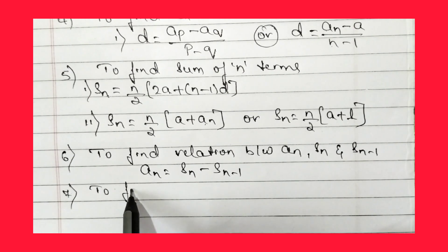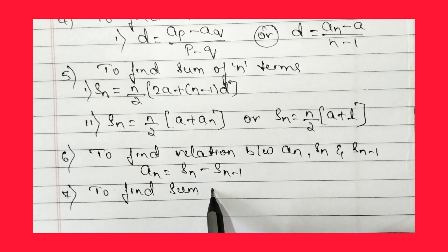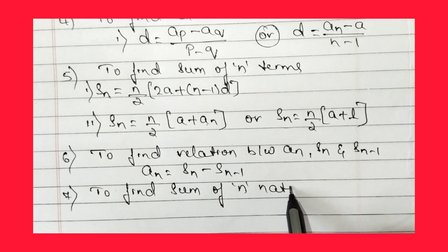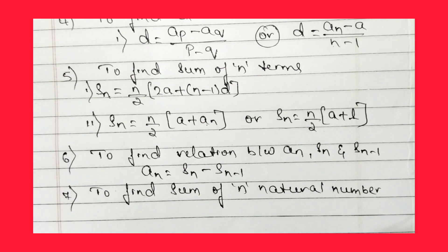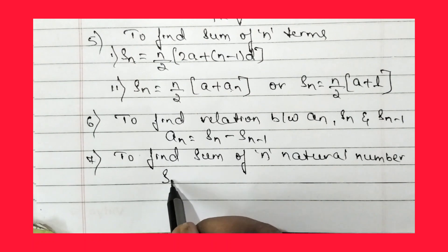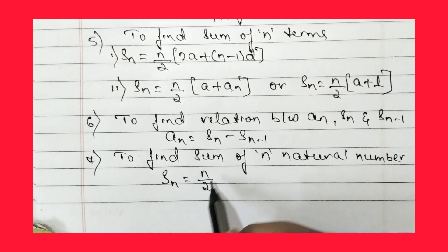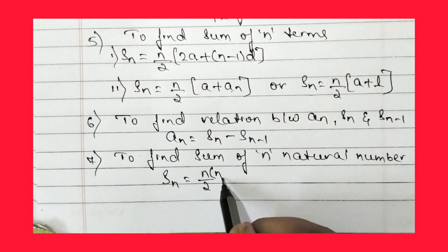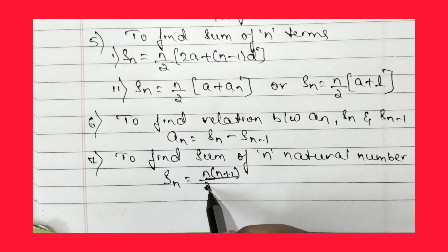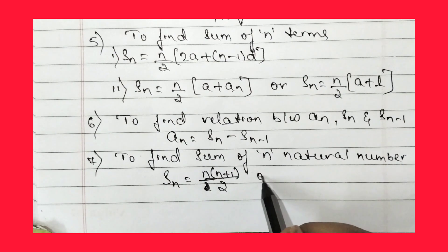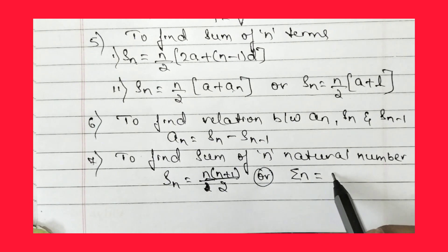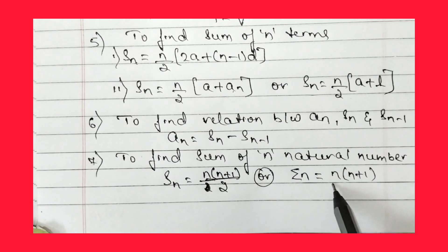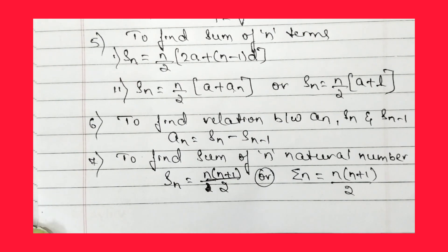The seventh formula is to find the sum of n natural numbers. The formula is: Sₙ = n(n+1)/2. We can also write this as sigma n = n(n+1)/2, where sigma n represents the sum of n natural numbers.